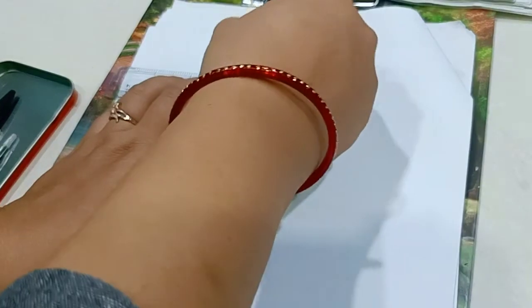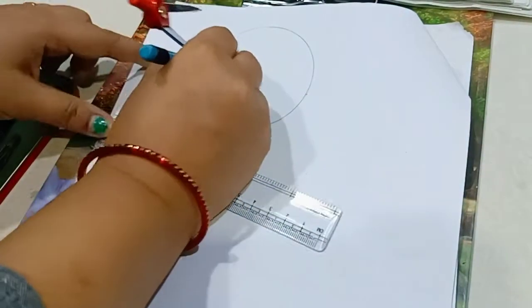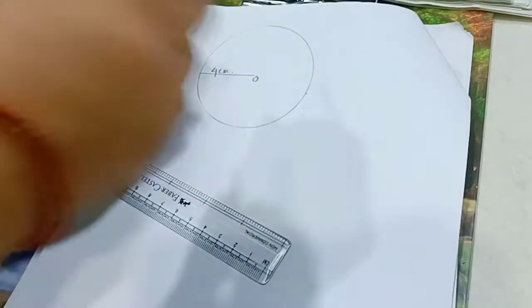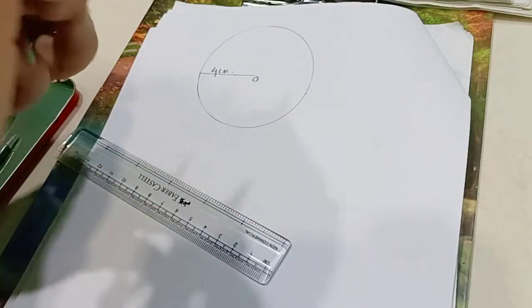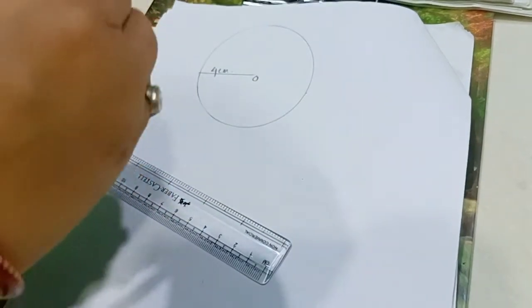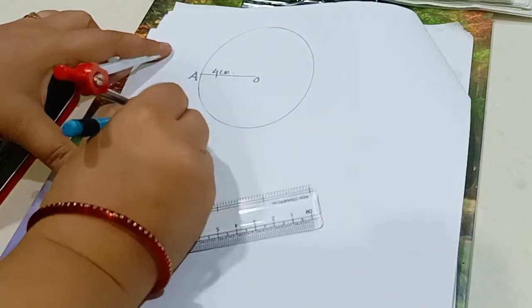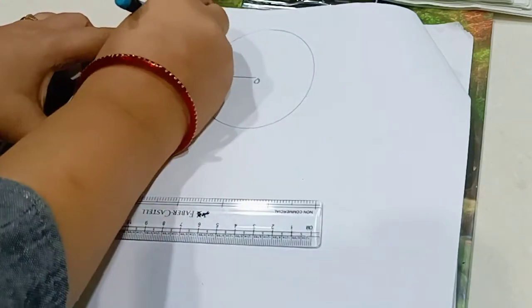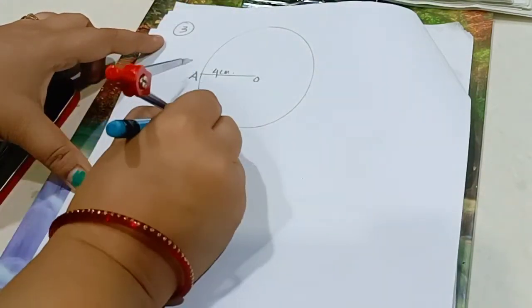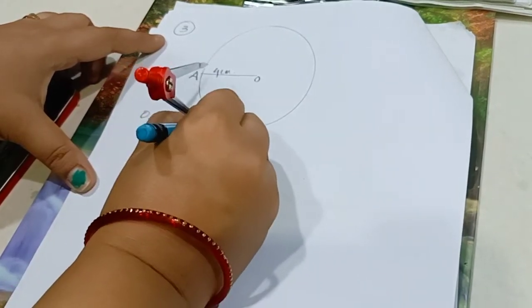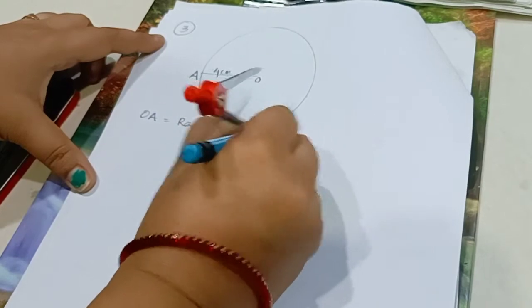Now join this line from O to this point, and this is the radius 4 cm. Now this OA, OA is the radius. Now question number 3. Radius is 4 cm.